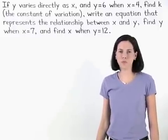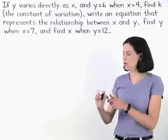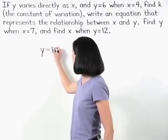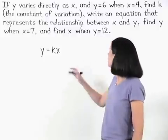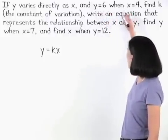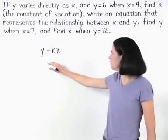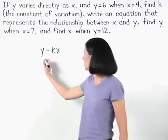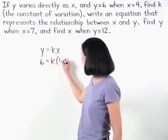We know that if y varies directly as x, then we can use the formula y equals kx. And we're given that y equals 6 when x equals 4, so we can substitute these values into our formula for x and y to get 6 equals k times 4.